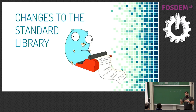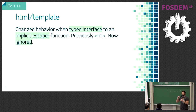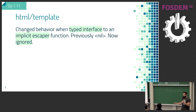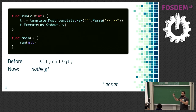In the standard library we have two breaking changes. The first is that when passing a typed nil interface to an implicit escaper in the HTML template package, instead of getting an escaped version of nil, you will get nothing. If you pass a pointer to an integer to a template, before it was printing the escaped version of nil. Now it will not print anything — though in all my tests it still prints it, and Brad Fitzpatrick said he doesn't know either.